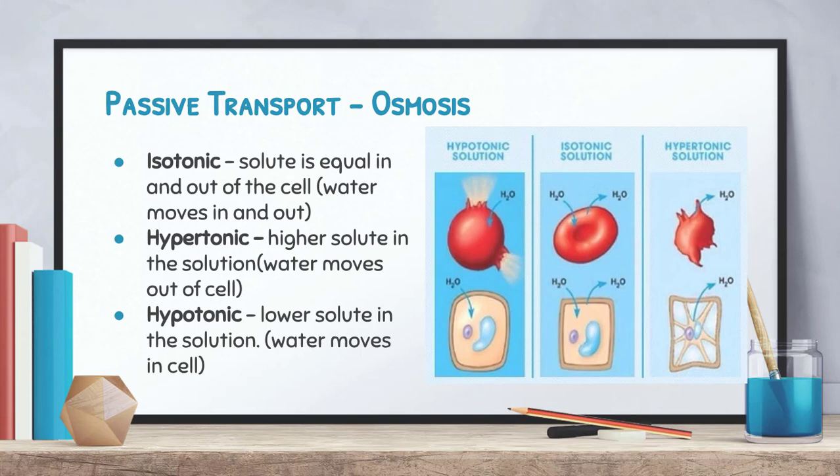Let's review the osmosis vocabulary terms. Isotonic — 'iso' means equal — is where there's an equal amount of solute inside and outside the cell, so water moves in and out at the same rate. Hypertonic means there's a higher solute concentration in the solution on the outside, so water moves out of the cell. Hypotonic means there's a lower solute concentration in the solution outside, so water moves into the cell. We'll practice with percentages as we get more experience.